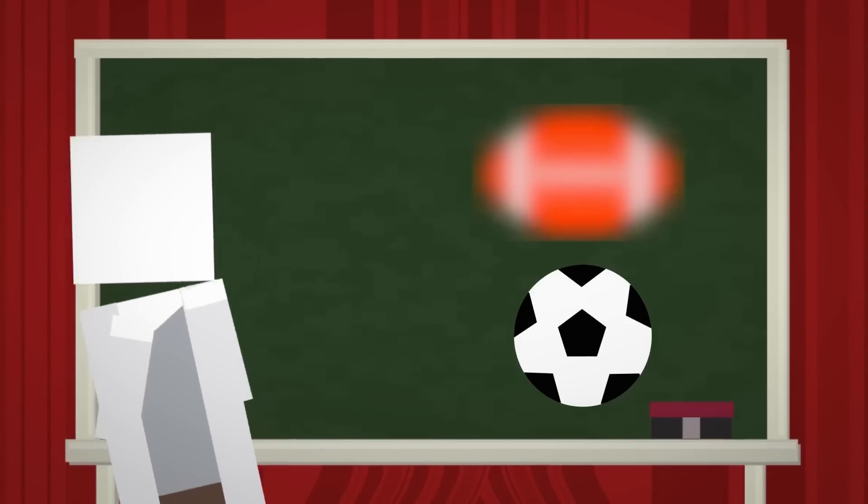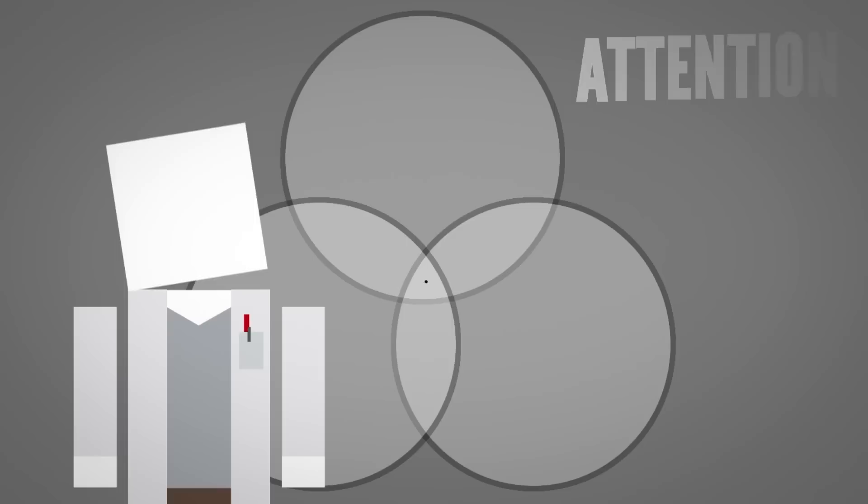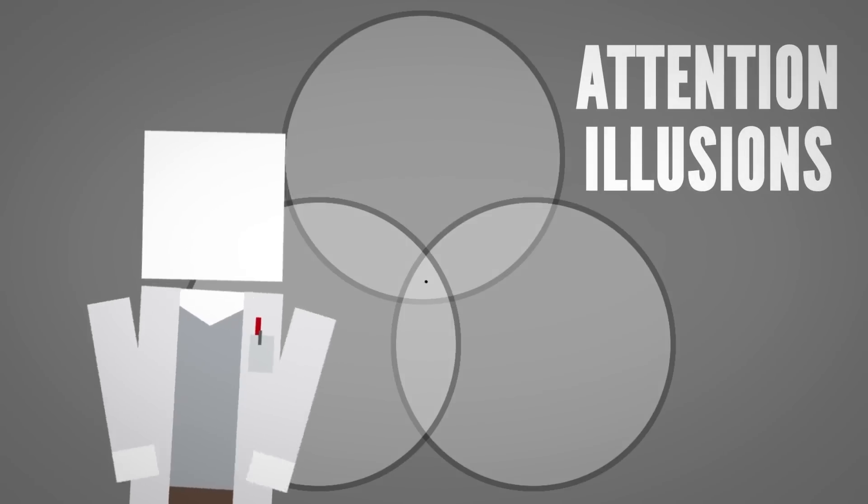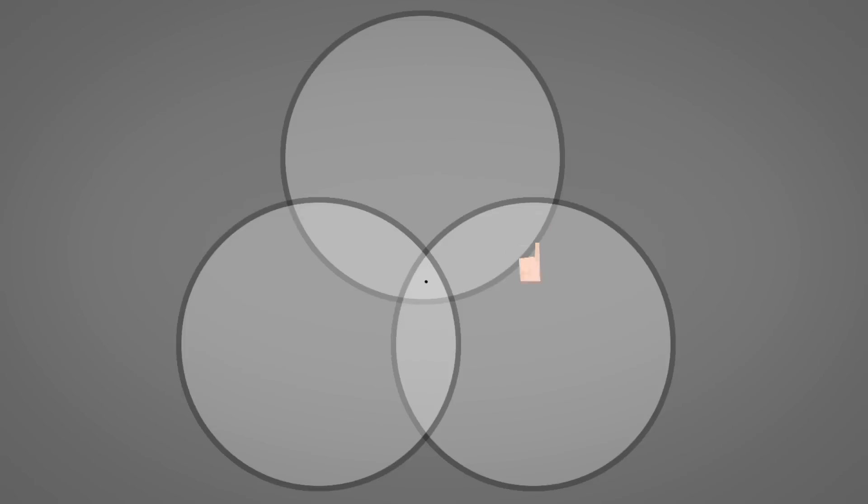But, don't just take my word for it. Try it out. This image was created by researchers studying attention illusions like the ones we showed you at the beginning of the video. While keeping your eyes on the blue dot in the center, focus your attention on one of the surrounding gray circles. Did you notice that the circle becomes brighter than the other two?